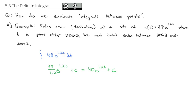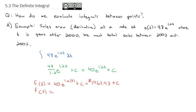We're interested specifically in the sales between 2003 and 2007. We take the antiderivative at t equals 3 — three years after 2000, which is 2003. That's 40e to the 1.2 times 3 plus a constant, which gives us 1,463.93 plus the constant. Plugging in 7 gives us the total sales up to year 7: that's 40e to the 1.2 times 7 plus a constant, which turns out to be $177,882.67 plus some constant.